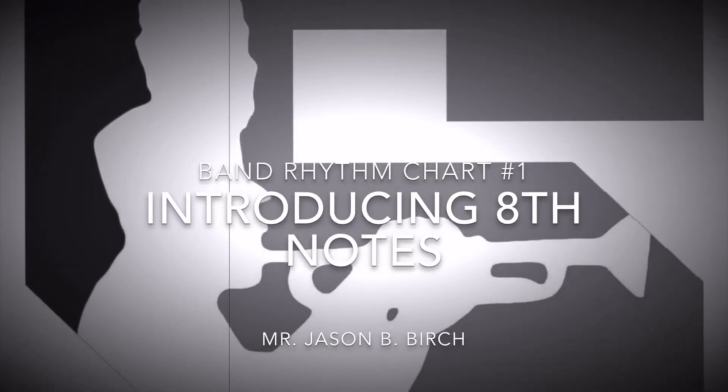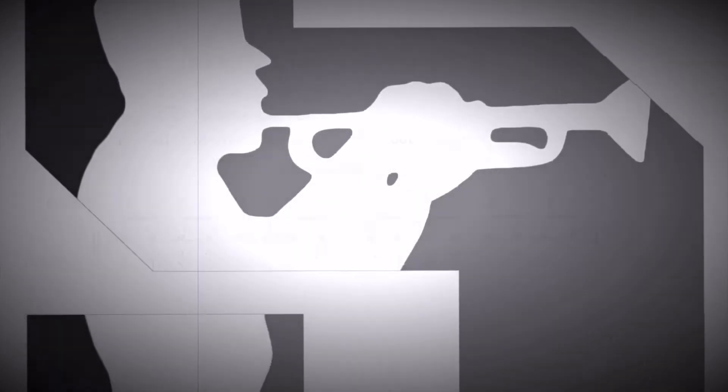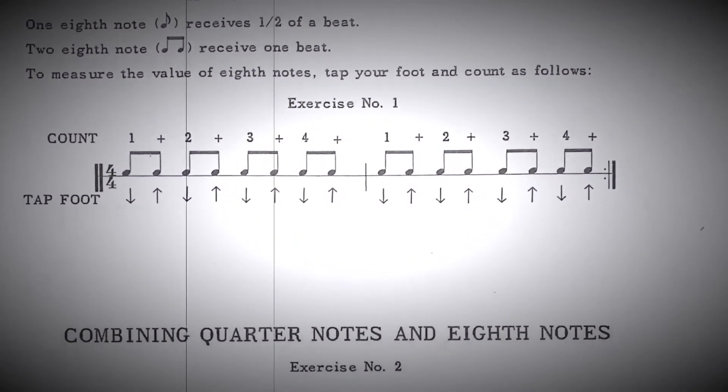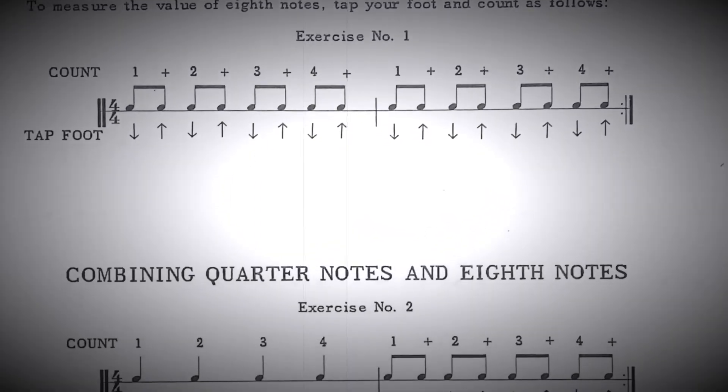In these rhythm exercises, we will be focusing on quarter notes and eighth notes. You will begin by tapping your foot on all downbeats: one, two, three, and four. As the foot rises, those will be the upbeats, which are counted as ands.